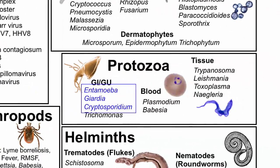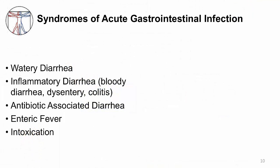Let's move on to protozoa. There are three important ones that cause gastrointestinal infections: Giardia, Cryptosporidium, and Entamoeba histolytica. That's the overview of all the pathogens that cause acute gastrointestinal infections. Another way of organizing acute GI infections is by their clinical syndromes, since many pathogens cause similar clinical symptoms.